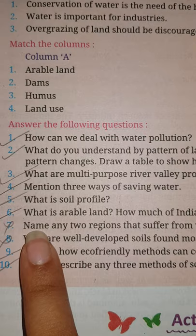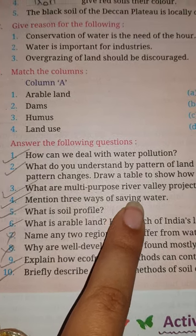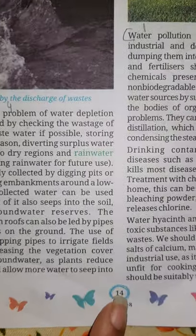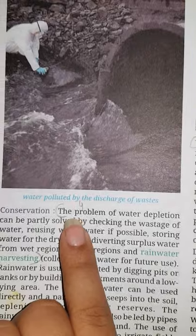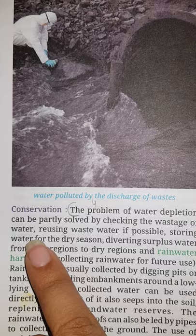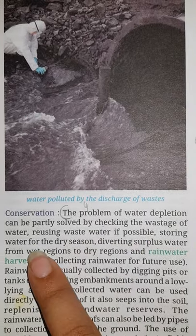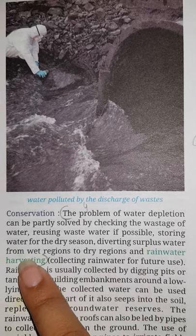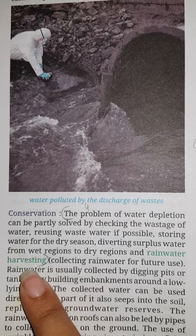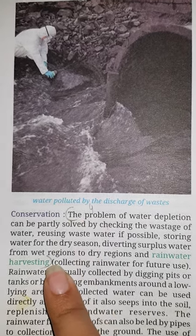Now see the next question: Mention three ways of saving water. Your answer is given on page number 14. The problem of water depletion can be partly solved by checking the wastage of water, reusing water, reusing waste water if possible, storing water for the dry season, diverting surplus water from wet regions to dry regions, and rainwater harvesting.